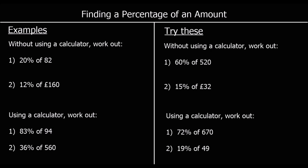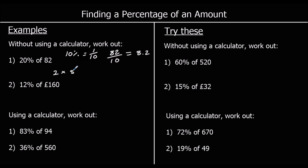Finding a percentage of an amount — without a calculator first. Work out twenty percent of eighty-two. We can always find ten percent of a number by dividing it by ten. Ten percent is the same as one-tenth, so ten percent of eighty-two is eighty-two divided by ten, which is eight point two. We want twenty percent, so two ten-percents make twenty percent: two times eight point two is sixteen point four.